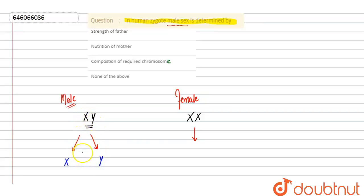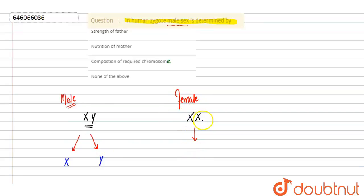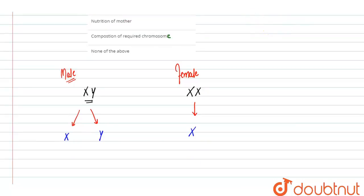Out of these two chromosomes, any one can enter the gamete — it is a chance phenomenon, a probability mechanism. It is not a hard and fast rule whether X or Y chromosomes will enter the gamete. In the case of females, only one type of chromosome is present, so only X chromosomes will enter the gamete.